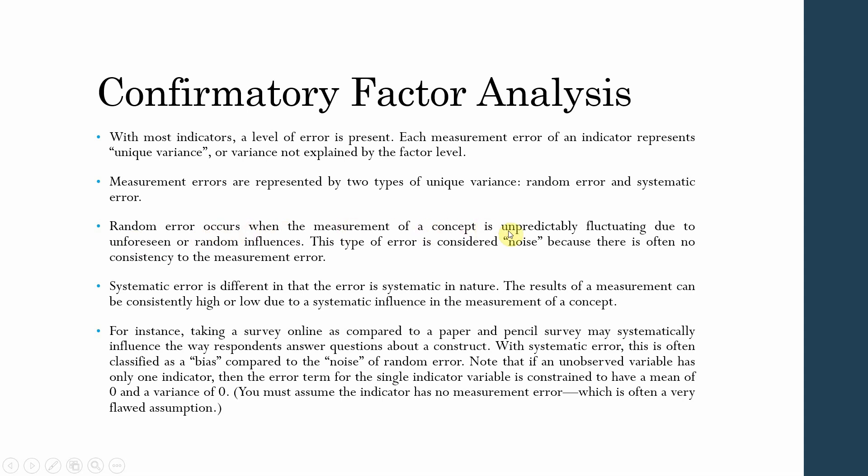This type of error is considered noise because there is often no consistency to the measurement error, whereas systematic error is different in that the error is systematic in nature.